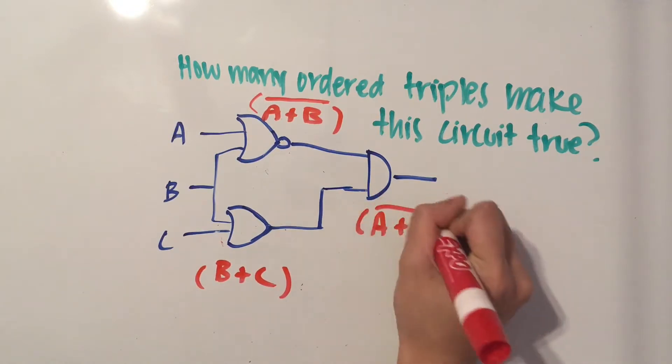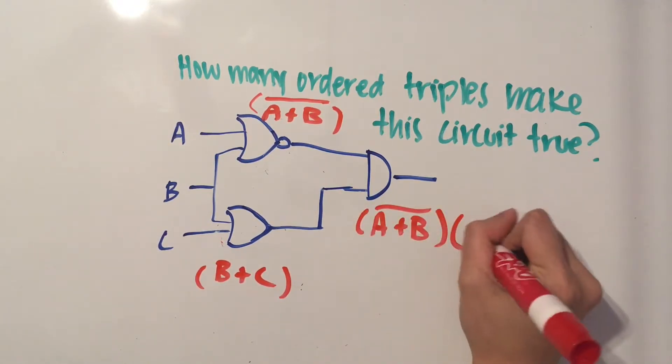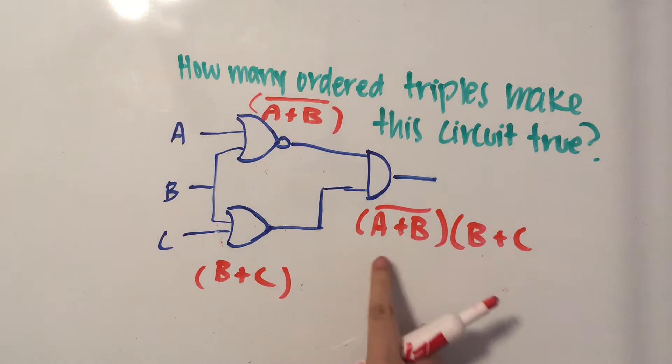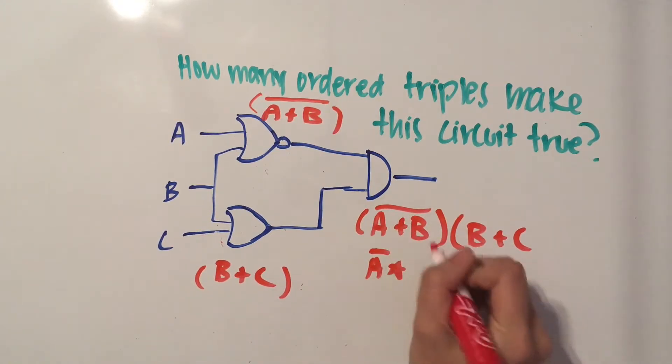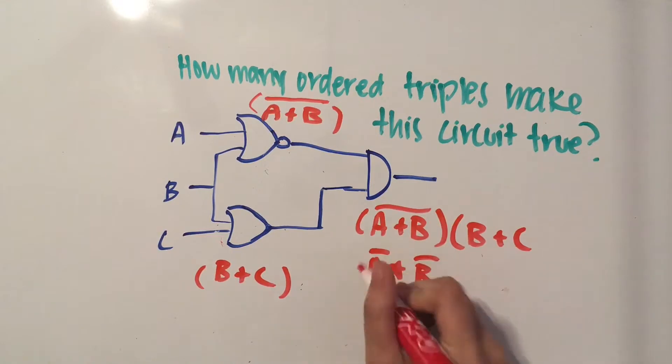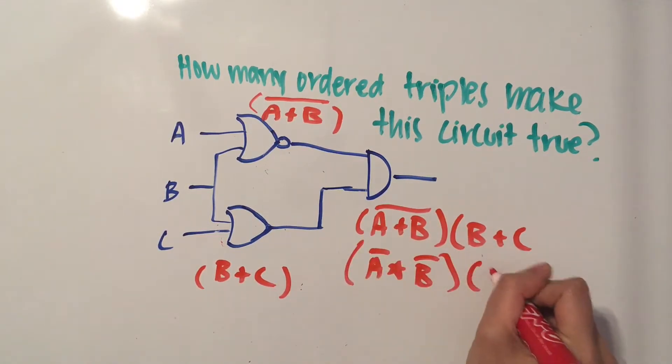So we have (A or B) NOT times (B or C). And you can simplify the left-hand side a little bit by distributing the NOT. So we have NOT A, and then the plus sign turns into a multiplication sign times NOT B. And then we have our B or C, which stays the same.